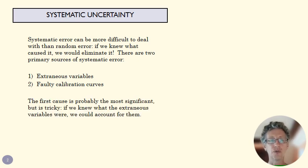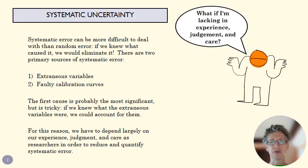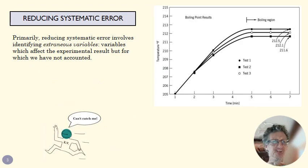So we have to sort of use our best judgment. Experience, judgment, and care are our best weapons against systematic error. And we try to deal with that systematic error as best we can. So again, if we're lacking in those things, maybe we need to do a different field.